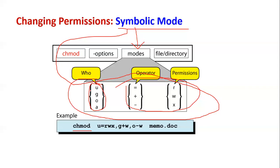For example, in chmod symbolic mode: u is the user or file owner. Plus means add a permission, minus means revoke permission, and equal means assign directly. r means read, w means write, x means execute. You can grant execute permission to a group owner, grant permission to other users, or remove write permission from others on a specific file like memo.doc.